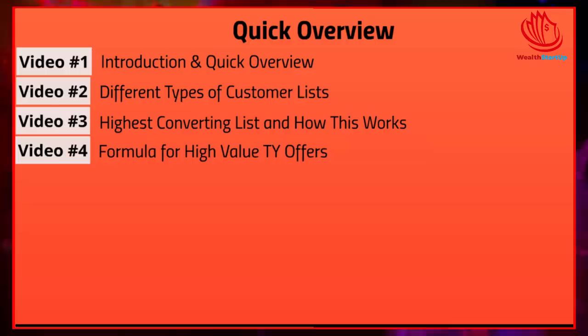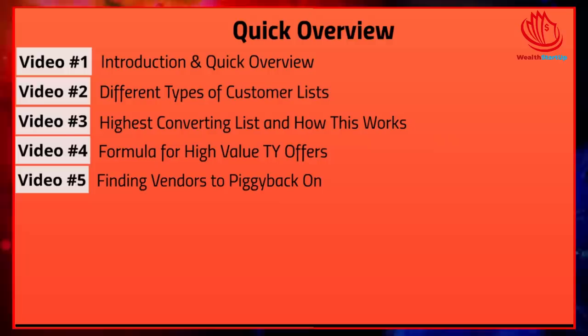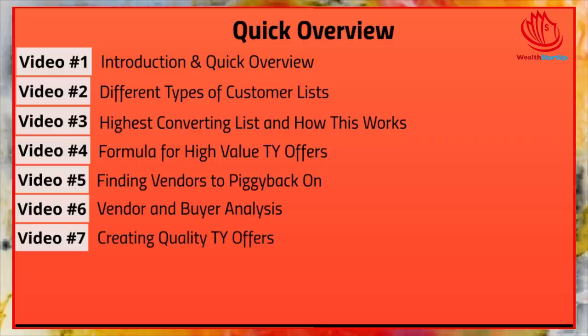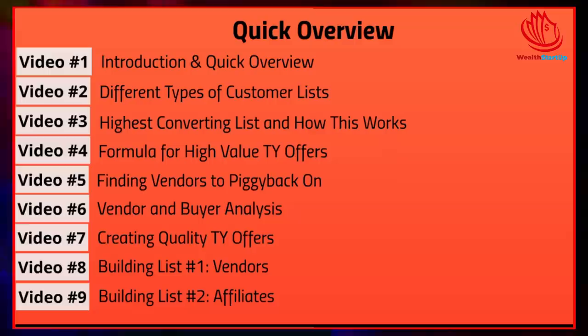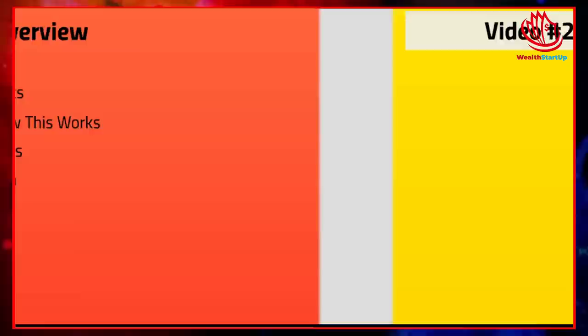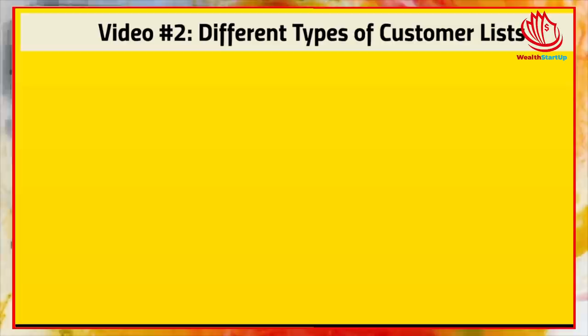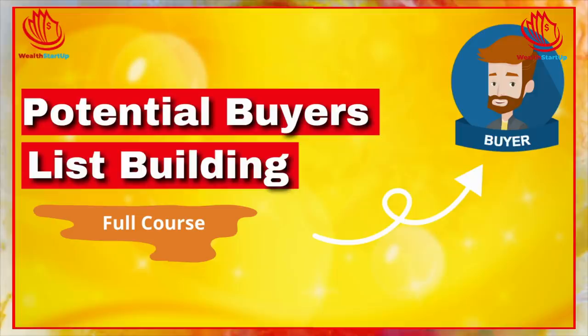Video number four, we're going to talk about the formula for the high-value thank you offers, which fits into the overall formula. Video number five, we're going to talk about finding vendors to piggyback on. Video number six, vendor and buyer analysis. Video number seven, creating quality thank you offers. Video number eight, building a list — after everything we've discussed, we'll talk about actual list building as far as vendors go. And video number nine covers building a list as an affiliate while waiting for vendors to say yes.